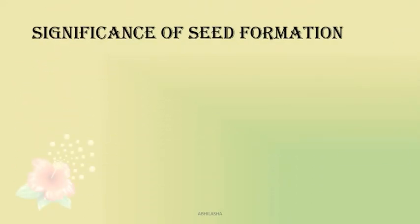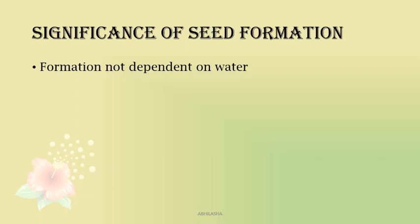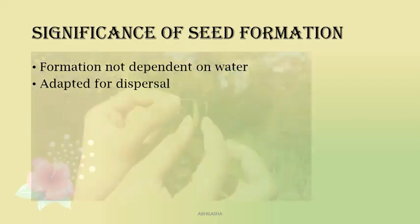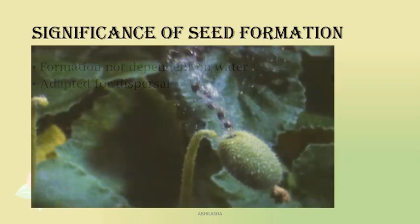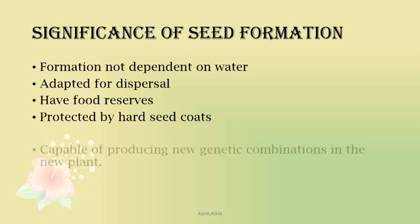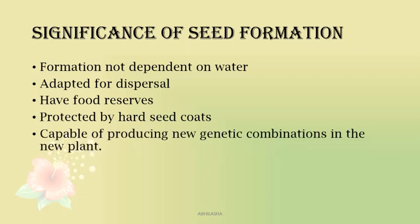Seed formation is very advantageous to angiosperms. Water is not needed for pollination or fertilization, so angiosperms can reproduce and thrive in areas with lesser water. Seeds are adapted for dispersal and can be transferred to far-off areas, helping in the spread of plants. They have sufficient food reserves to take care of emerging seedlings until photosynthesis begins. The hard seed coat protects them from adverse climates. And importantly, they are capable of producing new genetic combinations in the new plant.